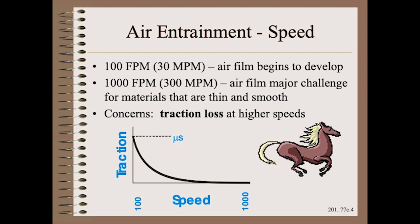Why does this matter? The answer is that increasing speed causes an increase in the boundary air entrained between the web and roller, or between the web and wound roll, and that in turn will reduce traction. Eventually, you will reach a speed where all traction is lost and then all runnability is lost. While details vary, this ranges from measurably reduced to totally lost traction on the order of 100 to 1,000 feet per minute, or 30 to 300 meters per minute in the metric system.